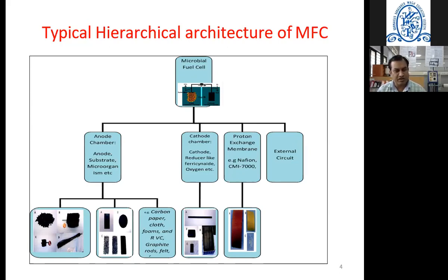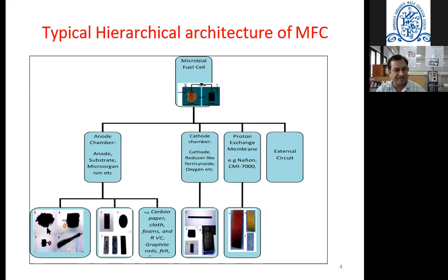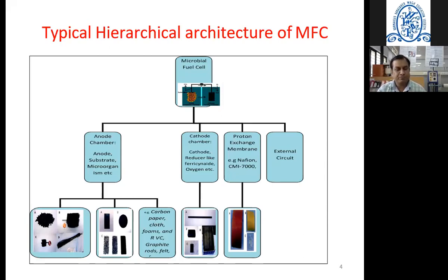Sometimes we add mediators, or glucose or sucrose solutions, for consumption by microorganisms to enhance the rate or increase MFC efficiency. The anode may be in rod form, plate form, fiber form, brush form, or powder form. Different researchers have different opinions on the size, shape, and material of the anode. Similarly, the cathode chamber must have agents like a reducer — ferricyanide, oxygen, etc. — and the electrode shape, size, and material is decided by the researcher.